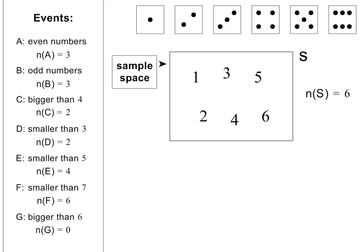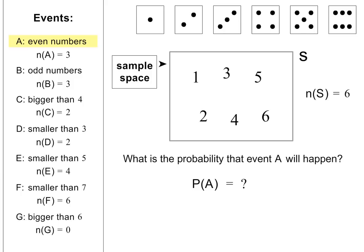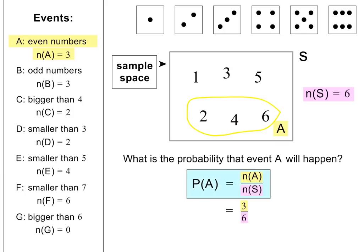Let's use this information to answer a few typical questions. What is the probability that event A will happen? In other words, what is the chance of getting an even number when you roll a die? In short, we can write this as P(A). There are three numbers in event A, and altogether there are six numbers. The probability of getting an even number is therefore 3 out of 6. The 3 comes from N(A) equals 3, and the 6 comes from N(S) equals 6. So to find P(A), we have divided N(A) by N(S). This formula is used to calculate the probability of any event A.